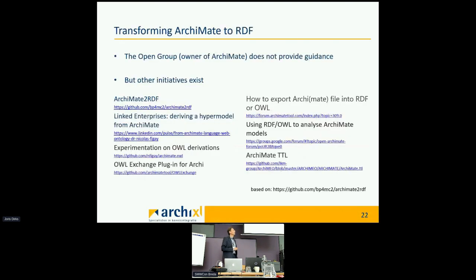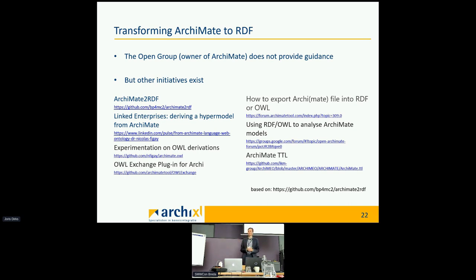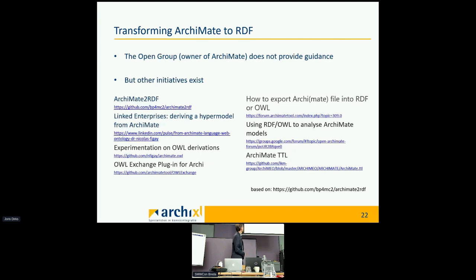So how can we transform ArchiMate to RDF? Ideally, the Open Group — the owner of the ArchiMate standard — would give us an RDF representation of ArchiMate, but they haven't. We asked for it, but it was a step too far for them. Fortunately, others have done that work. I have to give credit to Marco Wattingham, who created on GitHub something named bp4mc2 — a mapping from ArchiMate to RDF. It's not formally recognized, but it's usable, and it's available on GitHub.